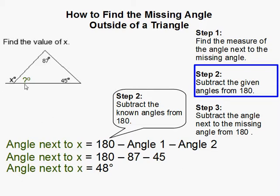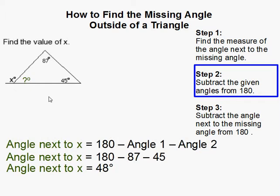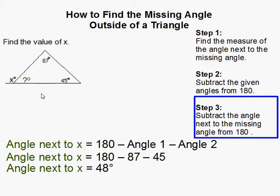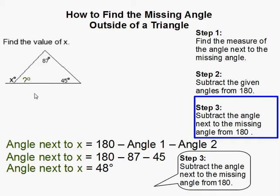Remember, we're not done because that's only telling us this angle here. Remember, we still need to find this angle. Now, in order to find this angle, notice they're on the same line. We subtract the angle next to the missing angle from 180 degrees.